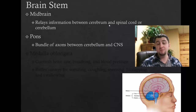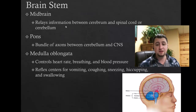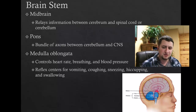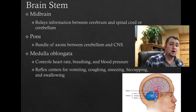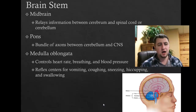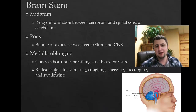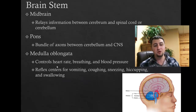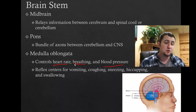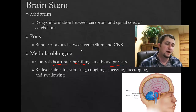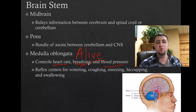The brainstem has several important parts. The midbrain is the relay center between the cerebrum and the spinal cord. The pons is a bundle of axons that acts as another relay station between the medulla oblongata, the cerebrum, and the thalamus. The medulla oblongata is primarily responsible for keeping you alive — it controls your heart rate, breathing, and blood pressure, and is also a reflex center for functions such as vomiting, coughing, sneezing, and swallowing.